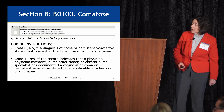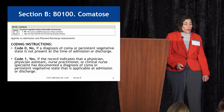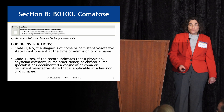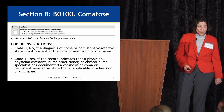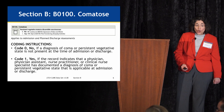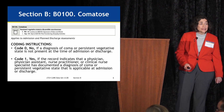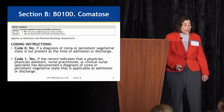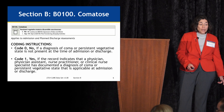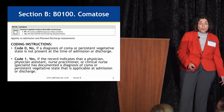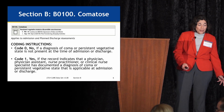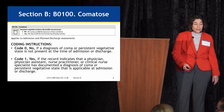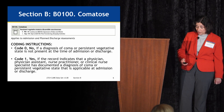B0100, comatose, applies to admission and planned discharge assessments. For coding, use code 0 — the answer is no — meaning a diagnosis of coma or persistent vegetative state is not present at the time of admission or discharge. Use code 1, yes, if the record indicates that a physician, physician assistant, nurse practitioner, or clinical nurse specialist has documented a diagnosis of coma or persistent vegetative state applicable at admission or discharge.